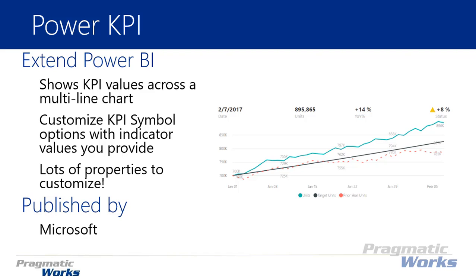There are a lot of customizations you can make to this visual. The property windows are pretty extensive. One of the values you can customize is the indicator you see in the top right — the little yellow triangle — which can be changed to many different visuals based on how you bring in your data. Your data can actually indicate what kind of value to show.